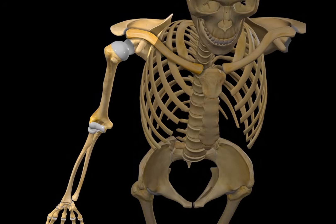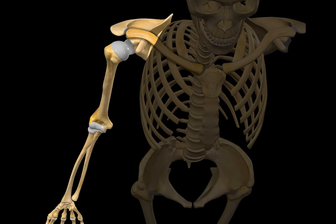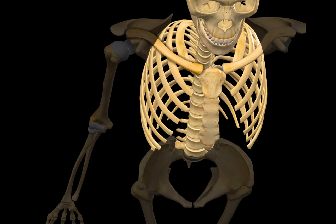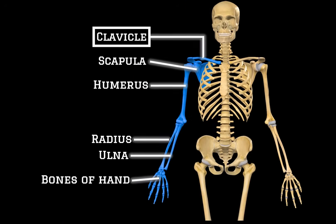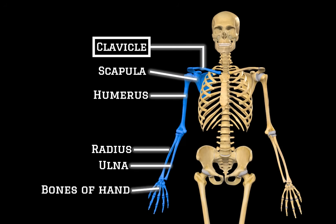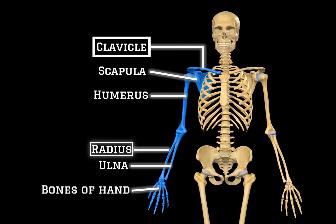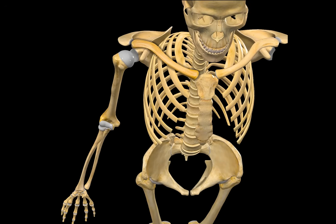Anatomically, it connects the upper limb to the axial skeleton. This makes the clavicle an important part of the upper limb, alongside the scapula, humerus, radius, ulna and the hand. It gives your upper arm freedom to move while protecting the underlying neurovascular bundle.